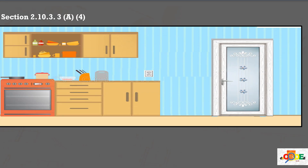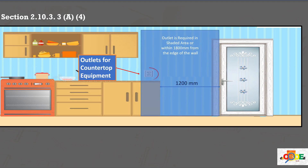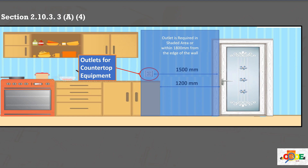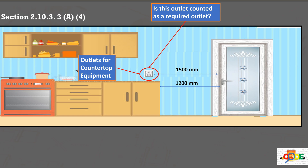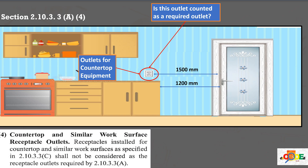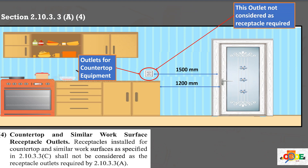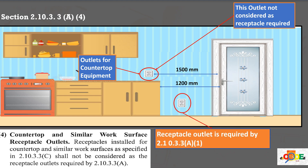In this example, the wall space is more than 600 mm, which means an outlet is required. However, there is an outlet in the countertop within 1,800 mm from the edge of the door. Is this outlet counted as a required outlet? In paragraph A4 of section 2.10.3.3, if an outlet is for countertops or work surfaces, even if within the spacing required in paragraph A1, this outlet is not considered to comply with the required outlet. Hence, an additional outlet within this area is required.